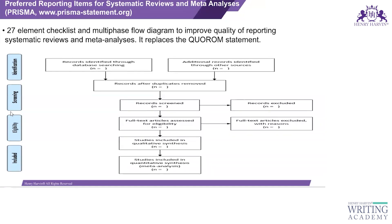That checklist covers the same information we have already discussed about how to write systematic reviews and what the additional steps are for writing them. The PRISMA checklist consists of 27 elements and also includes a multi-phase flow diagram, known as the PRISMA flow diagram.